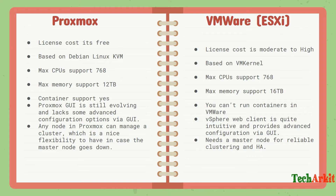Proxmox supports a maximum of 768 CPUs, and VMware also supports 768 CPUs. The maximum memory supported by Proxmox is 12 terabytes of physical RAM, but VMware ESXi supports up to 16 terabytes of physical memory.